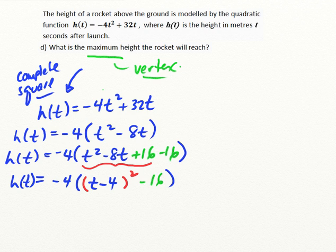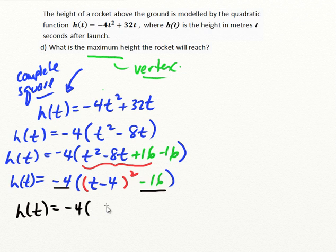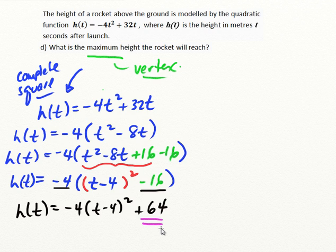Now for the last step to get vertex form: I take the perfect square trinomial — t squared minus 8t plus 16 — and express it as t minus 4 squared. Then I need to remove the negative 16 from the brackets by multiplying it by the negative 4 factor outside. Negative 4 times negative 16 is positive 64. So in vertex form, the equation is h at t equals negative 4 times the quantity t minus 4 squared plus 64. This confirms the vertex is at t equals 4 and the maximum height is 64 meters.